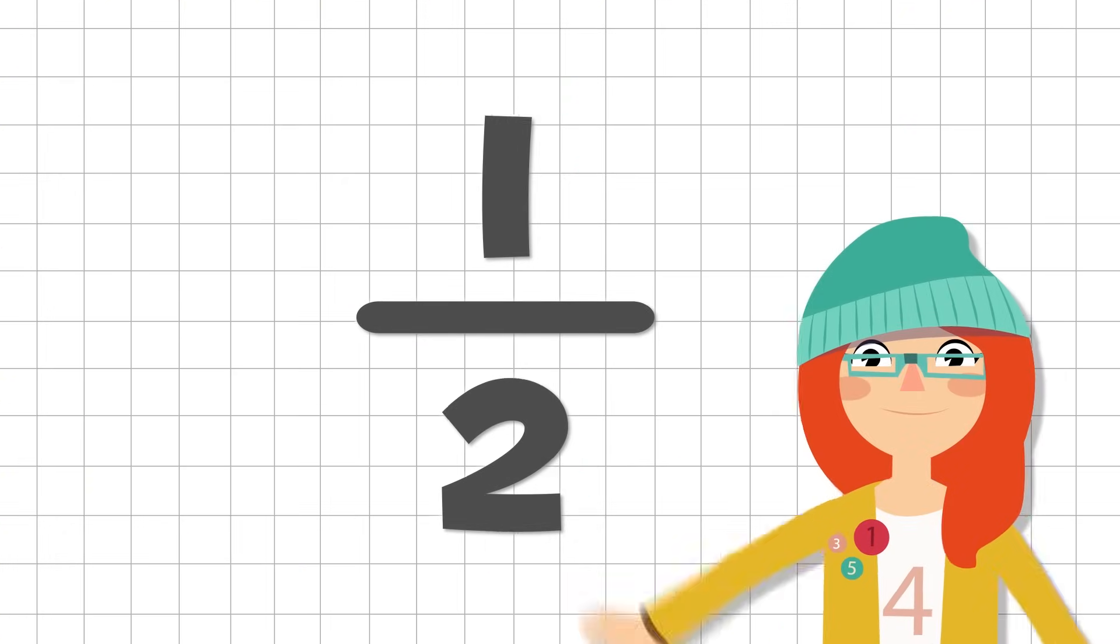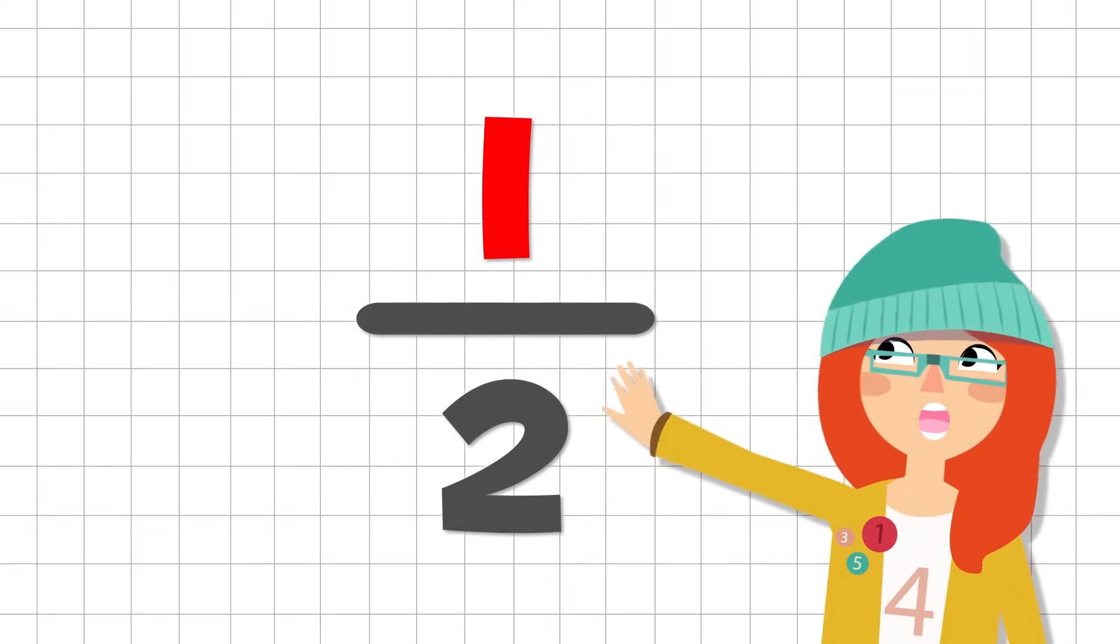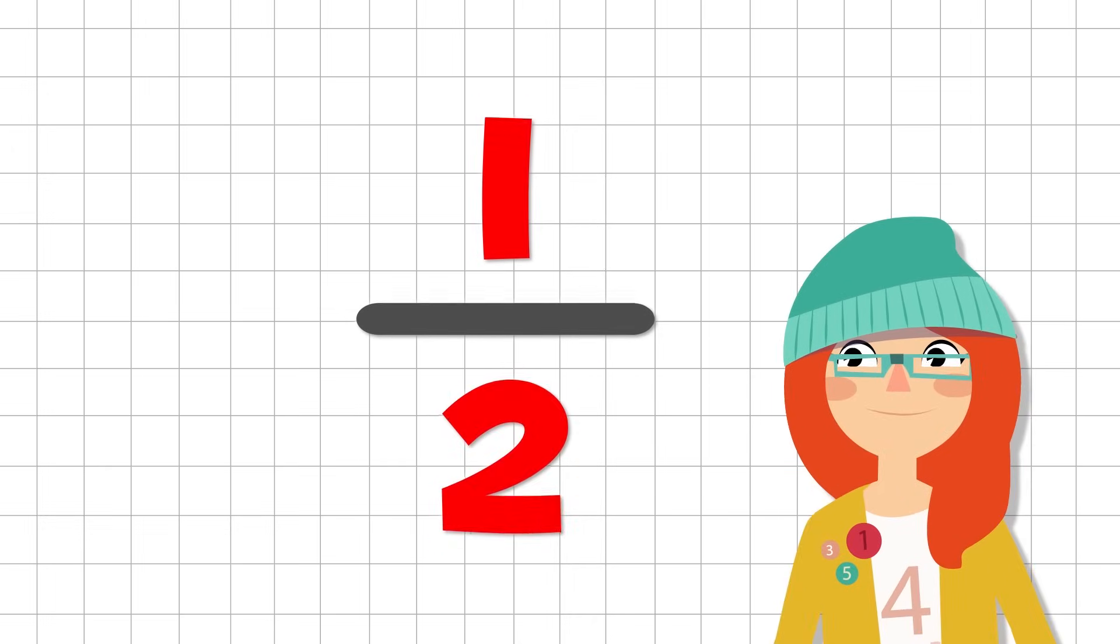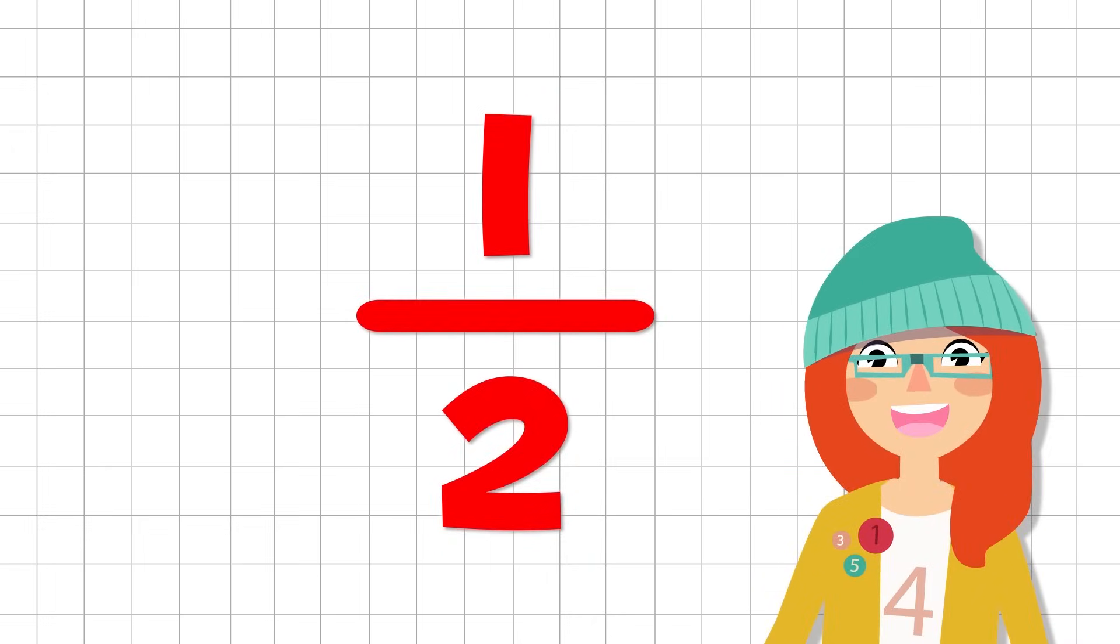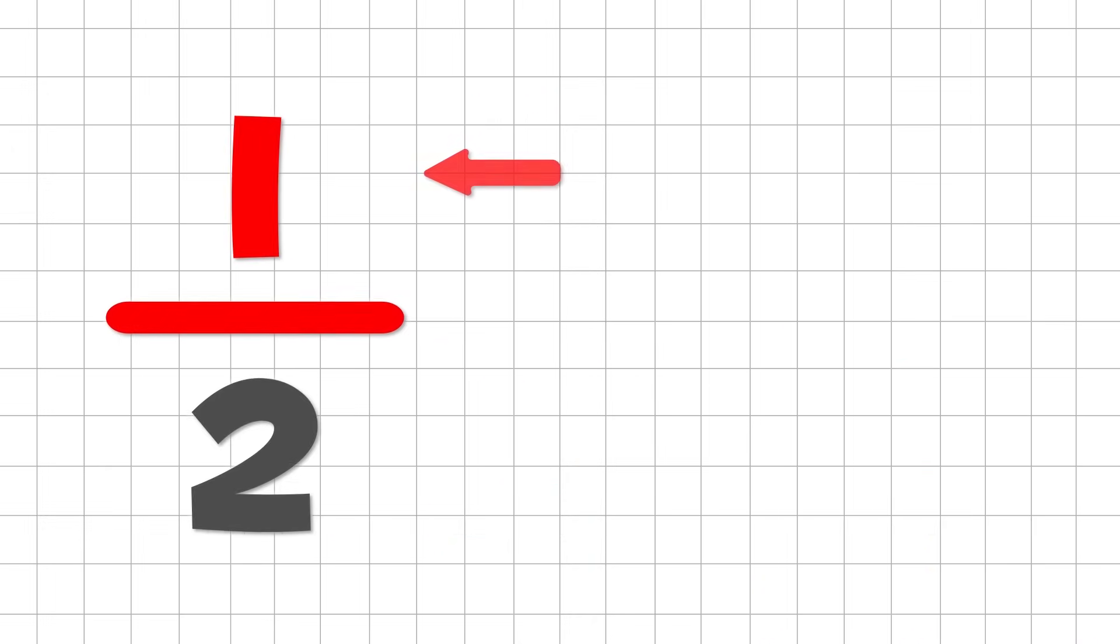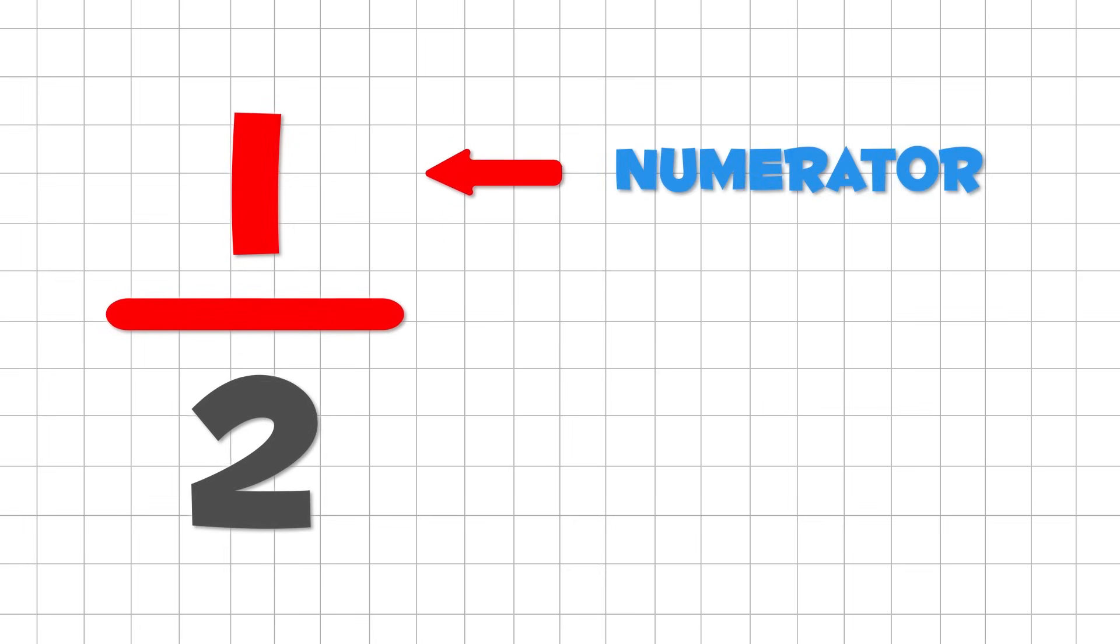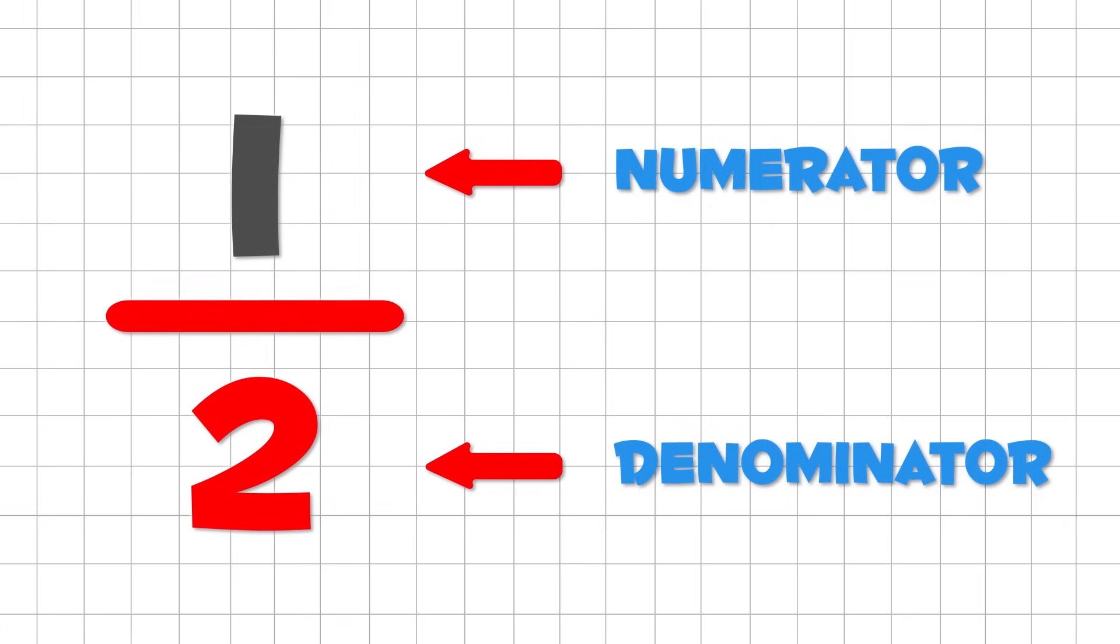Fractions are made up by two numbers. The number above and the number below. A line separates these numbers. The number above the line is called the numerator. Repeat after me. Numerator! Well done! The number below the line is called the denominator. Can you repeat after me? Denominator. That's it!